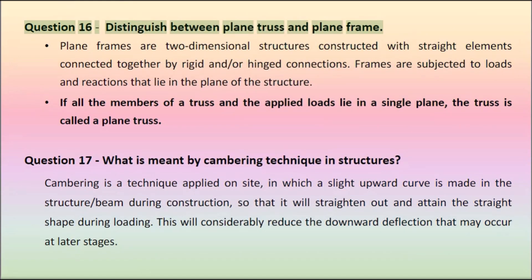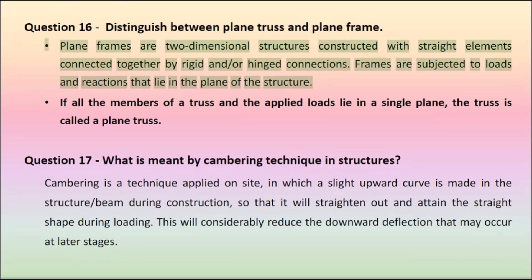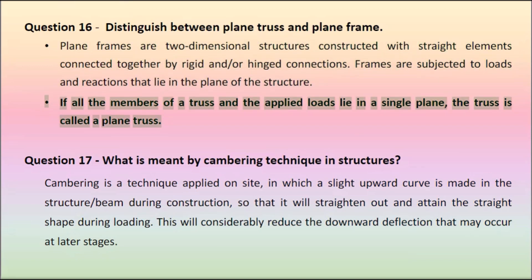Question 16: Distinguish between plane truss and plane frame. Plane frames are two-dimensional structures constructed with straight elements connected together by rigid and/or hinged connections. Frames are subject to loads and reactions that lie in the plane of the structure. If all the members of a truss and the applied loads lie in a single plane, the truss is called a plane truss.